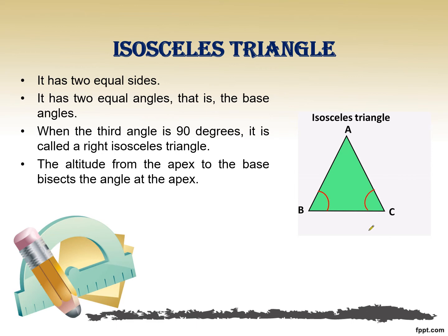Now let's understand isosceles triangle and how we can differentiate it from other types of triangle. Isosceles triangle is a triangle which has two equal sides. In the image we have a triangle ABC where the length of AB is equal to the length of AC. The corresponding angles to these equal sides are equal — angle B equals angle C.